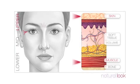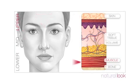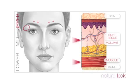Crows feet, frown lines and forehead lines become etched in skin over time as permanent wrinkles. Loss of muscle elasticity and descent of the soft tissue of the forehead contributes to the descent of the brow.